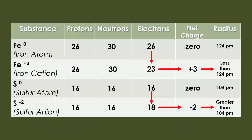You're noticing in these charts that the elements themselves — those are the ones with the zero charge — are the ones you find right off the periodic table. But when these elements either gain electrons like sulfur or lose electrons like iron, their radii are going to change. As they lose electrons like iron, they get smaller in size and have a positive net charge. While if they gain electrons like sulfur, they will get larger in size and will have a negative net charge.